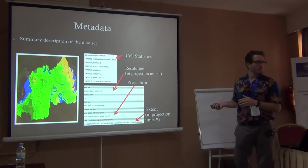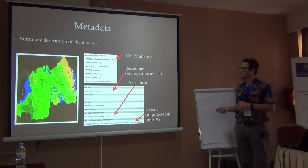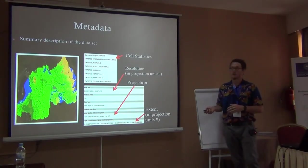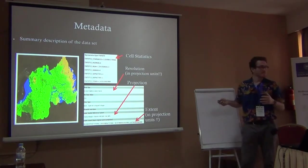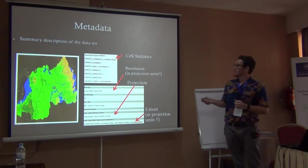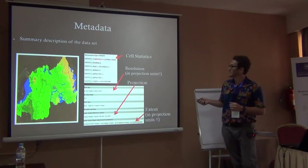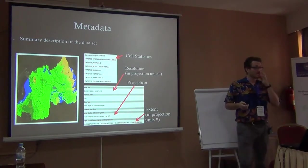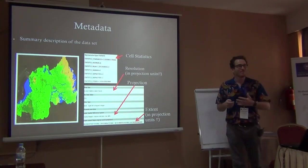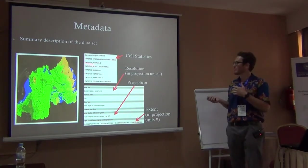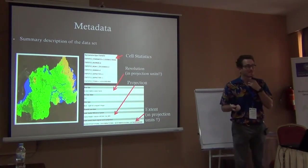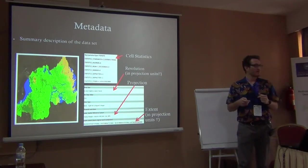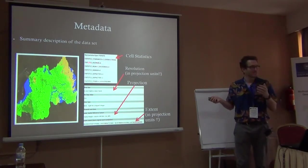This is the metadata we were talking about earlier. Here's the Rwanda land cover — the metadata tells us all about this data set. In this case we have different statistics; the maximum value is 6. We don't have information in the metadata to tell us what 6 represents, because raster data has to be numeric — it can't say 'cropland,' it has to be a number.